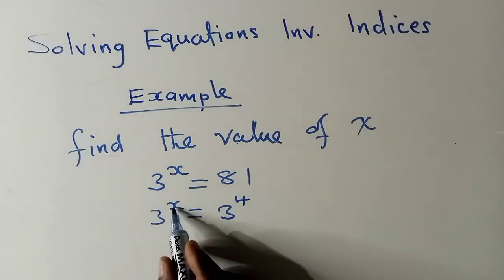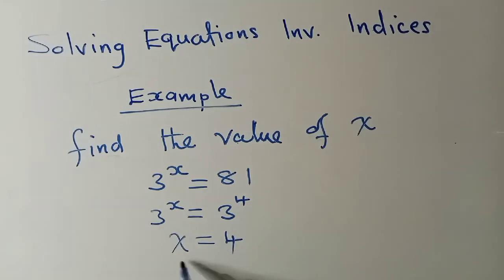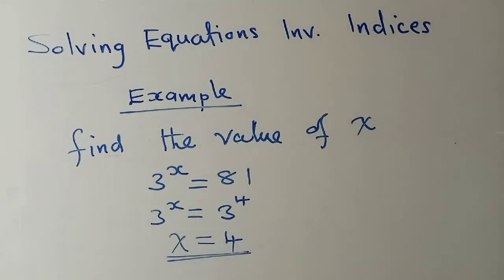I say x, the power which is over here, is equal to the power which is over here, is equal to 4. This is the solution. This is how you work out such kind of questions.